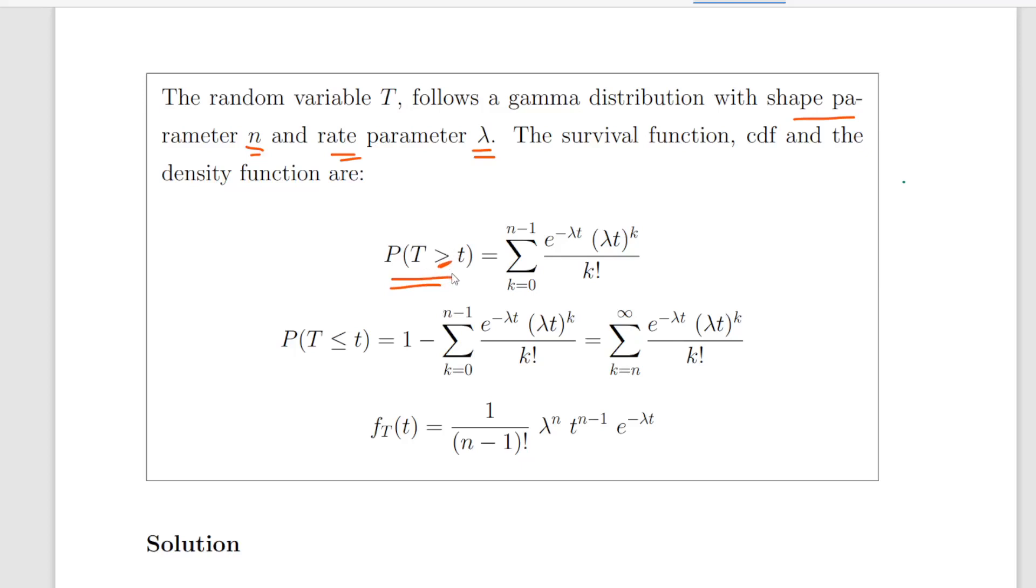Now just for the sake of brevity, what we look at specifically is the survival function. Because T is a continuous random variable, we can put greater than or equal to in there. So that is the summation from k equals 0 to n-1 of e^(-λt) × (λt)^k / k!.